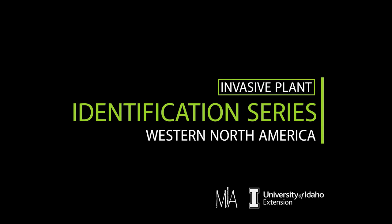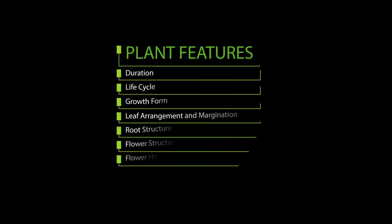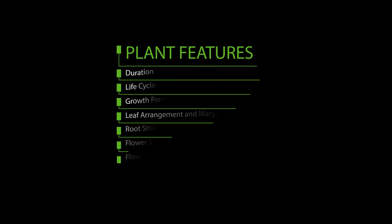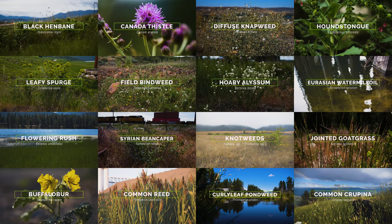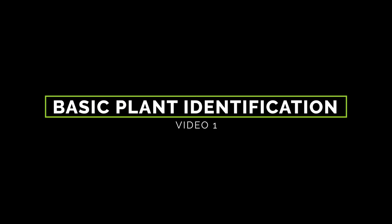Throughout this weed identification series, we use specific terms to quickly describe a weed's life cycle, growth form, leaf arrangement and margination, root structure, and flower structure, all of which help viewers determine the key traits that set that weed apart from other plants. In the interest of time, we don't define those specific terms in the actual weed identification videos, so the purpose of this video is to give you definitions and examples of those keywords.